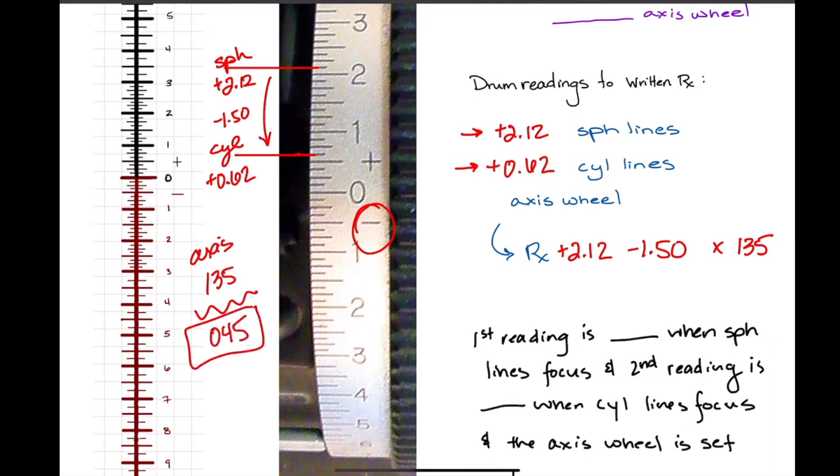Then this becomes my sphere and this becomes my cylinder, which would then allow us to write the prescription as plus 0.62, plus 1.50 at axis 45.